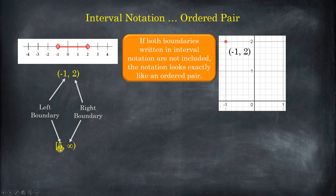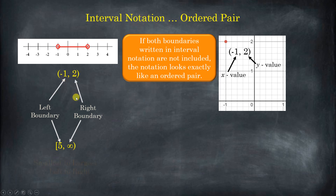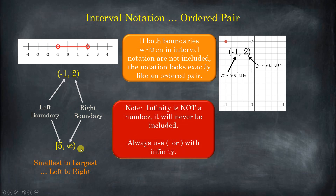Interval notation always goes smallest to largest from left to right. For example, if this left boundary of 5 is included and the right boundary is infinity — well, infinity is not really a number, so we can't include it. And if we compare interval notation to a coordinate, in a coordinate the first number is the x value and the second is the y value, it doesn't matter which is larger. But for interval notation, the smaller number always goes on the left and the larger on the right. Since infinity is a concept, not a number, always use parentheses with infinity.